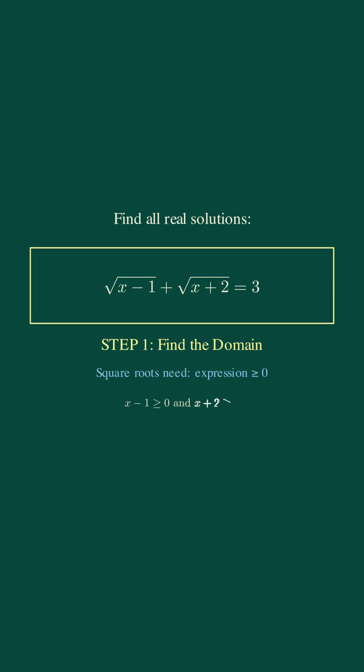1 greater than or equal to 0 and x plus 2 greater than or equal to 0. This gives us x greater than or equal to 1. Step 2: Smart substitution. Let u equal square root of x minus 1